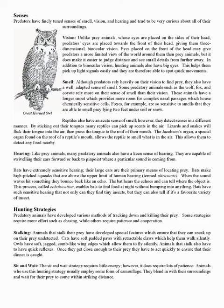Predatory animals have developed various methods of tracking down and killing their prey. Some strategies require more effort, such as chasing, while others require patience and cooperation. Animals that stalk their prey have developed special features which ensure they can sneak up undetected. Cats have soft padded paws with retractable claws which help them walk silently. Owls have soft, jagged, comb-like wing edges which allow them to fly silently. Animals that stalk also need quick reflexes — once they get close enough, they must act quickly to ensure their dinner is caught.